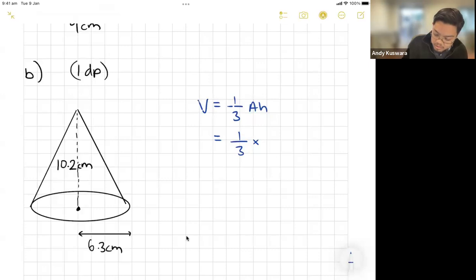So it's going to be pi times radius squared, so pi times 6.3 squared, and then I'm going to multiply it by the height which is 10.2. Just put it into your calculator: one-third times pi times 6.3 squared multiplied by 10.2.